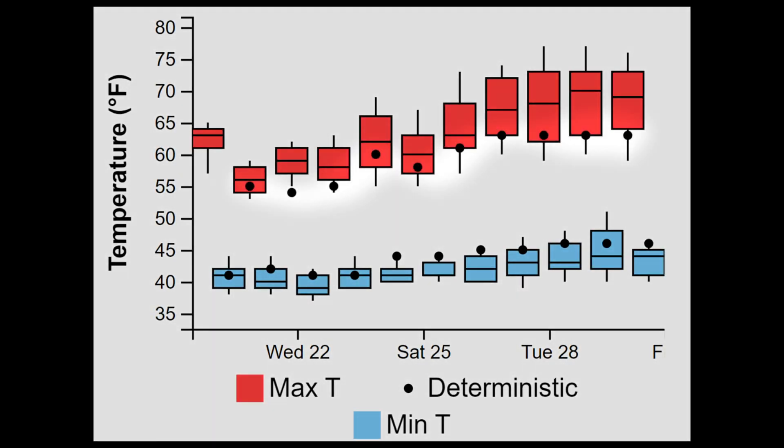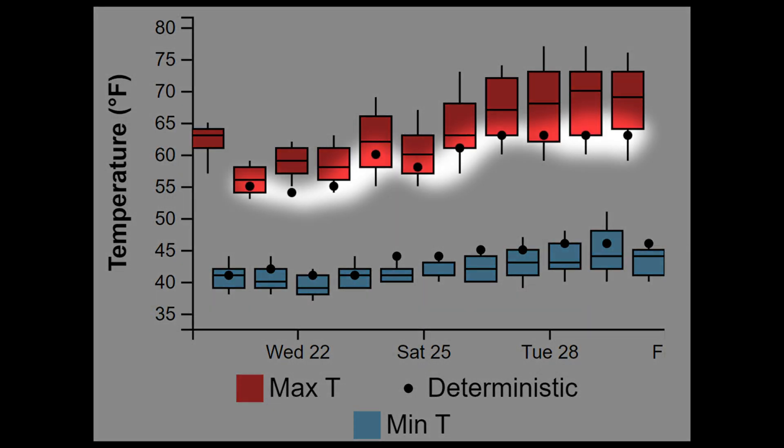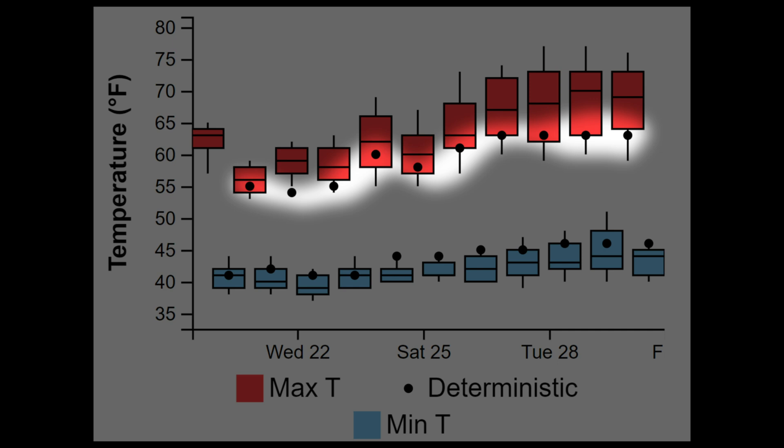When there are significant differences, where the values do not line up on the box and whisker plot or are significantly different from the 50th percentile, that would be a good opportunity to look at the ensembles and models data to see why there is such a big difference.